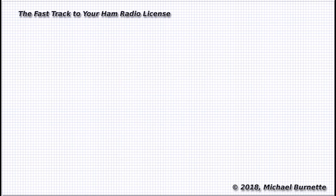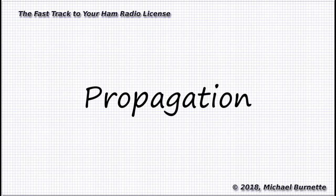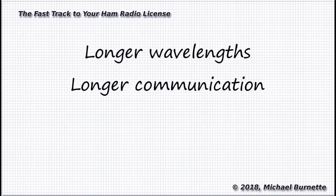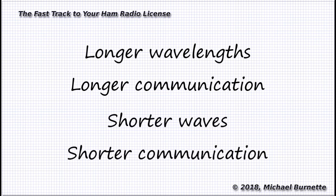There are three main areas where wavelength is very significant. One is propagation. Basically, where our signal is going to go after it leaves our antenna. In general—that's an important disclaimer there—in general, longer waves are for longer-distance communication, shorter waves for shorter distances.